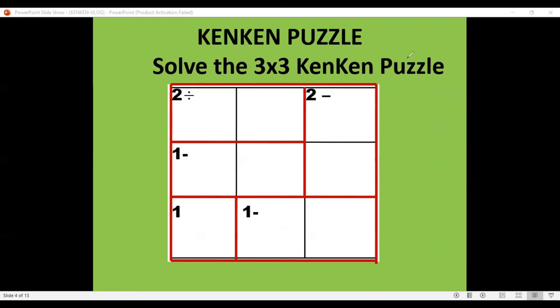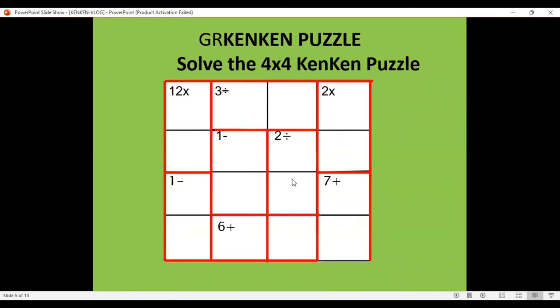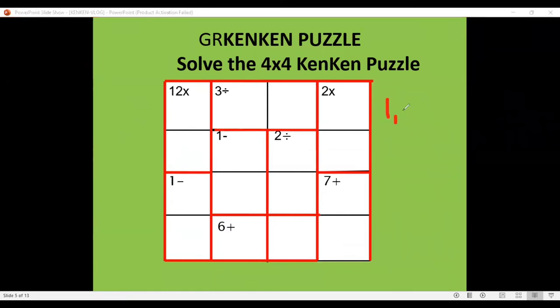Now let's have some more examples. We will try to deal with a 4x4 KenKen puzzle. As you notice, this one is already 4x4. Therefore in this case, we will be using the digits 1, 2, 3, and 4.